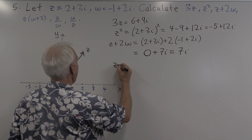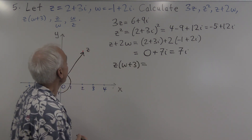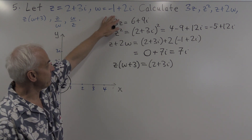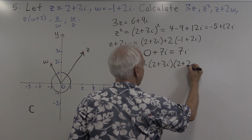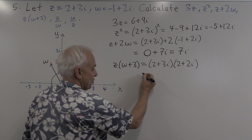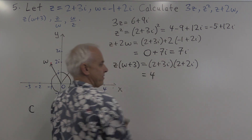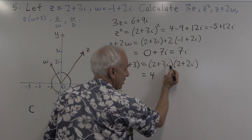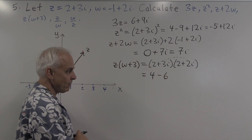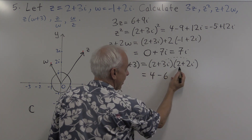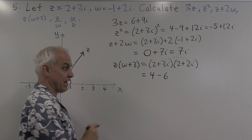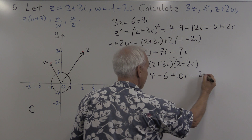How about z times w plus 3? z is 2 plus 3i. w plus 3: we can just add 3 immediately to w, making it 2 plus 2i. To expand this out, we use the usual distributive law. There's going to be 2 times 2, which is 4. And 3i times 2i for a total of 6i squared, or minus 6. Then the mixed terms: 2 times 2i is 4i, and 3i times 2 is 6i, for a total of 10i. Altogether, minus 2 plus 10i.